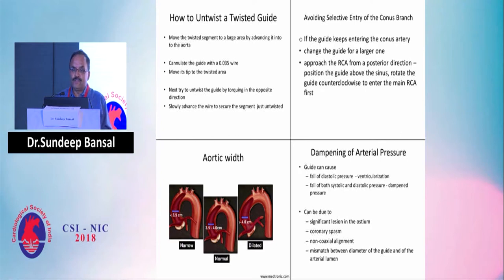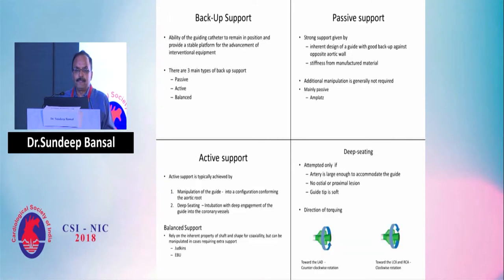A common problem is entering the conus branch when hooking the right coronary artery, simply because the catheter size is undersized. Use a size bigger — if using JR 3.5, switch to JR 4 — and you will avoid repeatedly entering the conus branch.